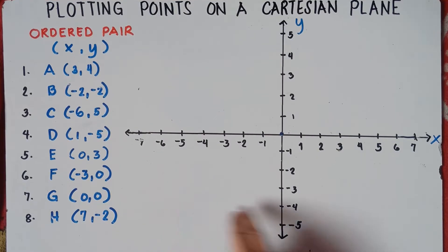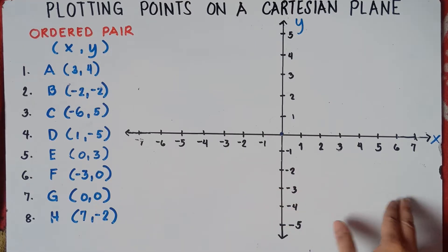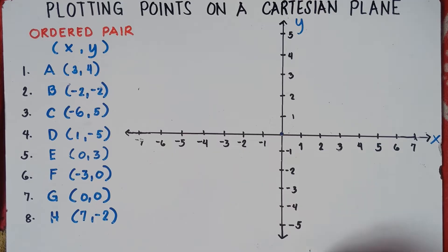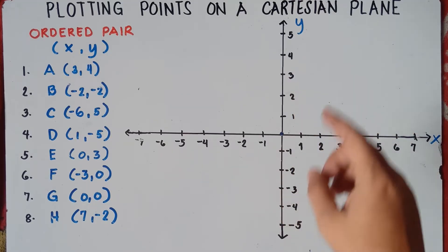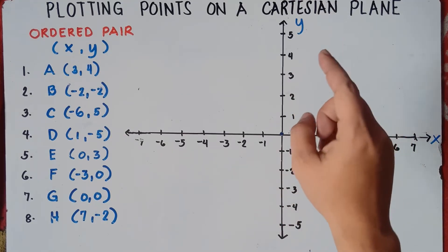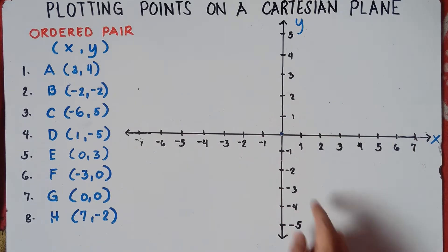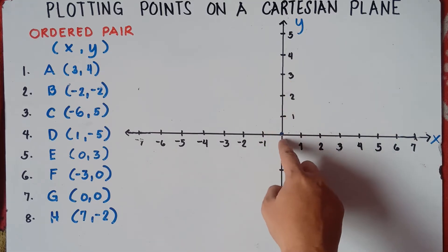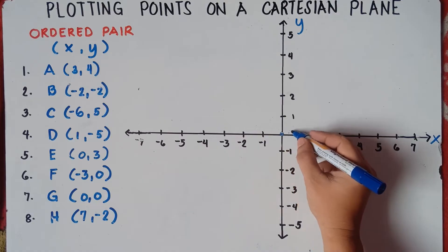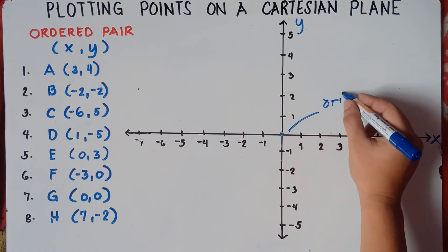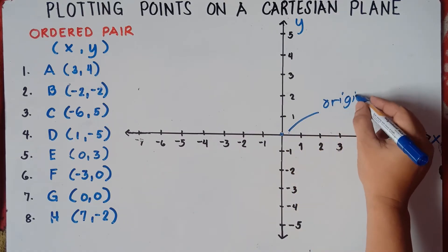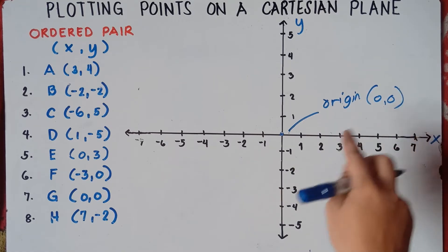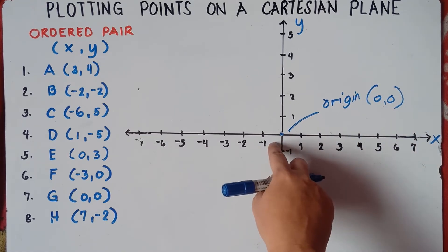In the Cartesian plane, the horizontal line is what we call the x-axis — I will just label it x. And the vertical line is what we call the y-axis — I will just label it y. Now the center part, the intersection of x and y, is what we call the origin. The value for the origin is (0, 0): 0 for x, and 0 for y.